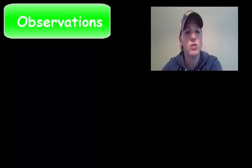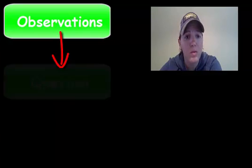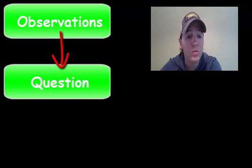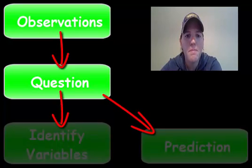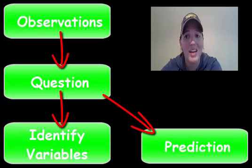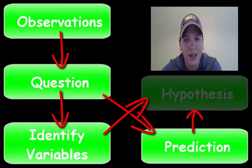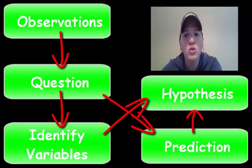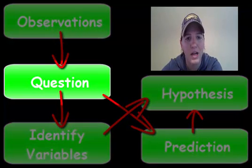In our previous videos we took an observation and turned that observation into a question. We had to rephrase our question a little bit to make sure it was testable. Then we made a prediction and identified our variables — our independent and our dependent variable. We used our prediction and our identified variables to write a hypothesis. Remember a hypothesis is an educated guess that is an if, then, because statement.